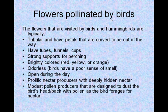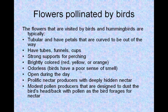Flowers pollinated by birds. The flowers that are visited by birds and hummingbirds are typically tubular, and have petals that are curved to be out of the way. They have tubes, funnels, and cups, with strong supports for perching. Brightly colored, like red, yellow, or orange. Odorless, because birds have a poor sense of smell. Open during the day. Prolific nectar producers with deeply hidden nectar. Modest pollen producers, designed to dust the bird's head and back with pollen as the bird forages for nectar.